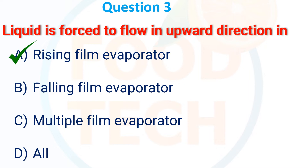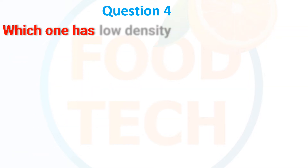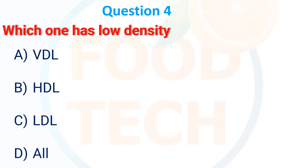Next MCQ: Which lipoprotein has low density? Options: (A) VLDL, (B) HDL, (C) LDL, and (D) All. The correct answer is A — VLDL.